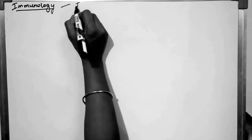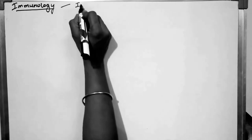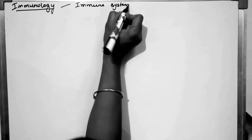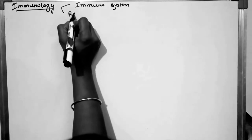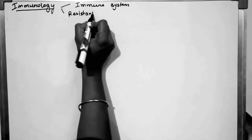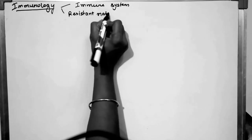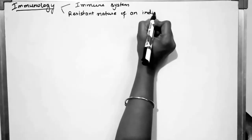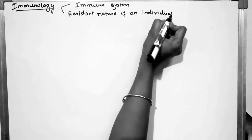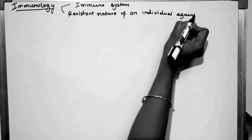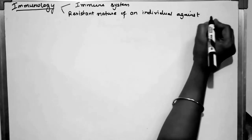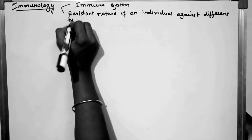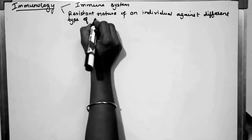What is Immunology? It's a science that deals with the immune system. Immunology is the resistant nature of an individual against different types of microorganisms.